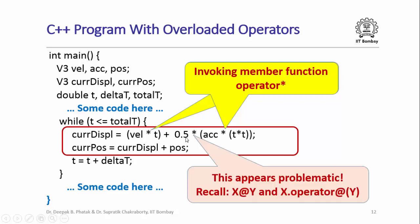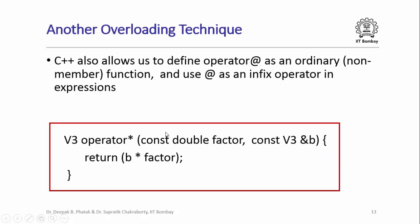But what about the expression 0.5 star something? To interpret this, I would need to apply 0.5.operator* on the vector, but that does not make sense — 0.5 is not a receiver object of class V3. C++ provides another overloading technique to solve this problem: for every member function operator@ defined within a class, C++ also allows you to define operator@ as a non-member function.